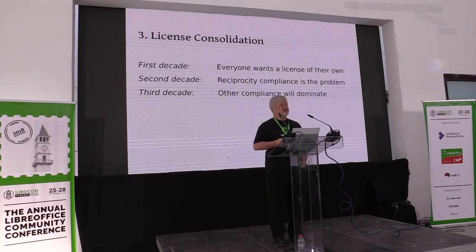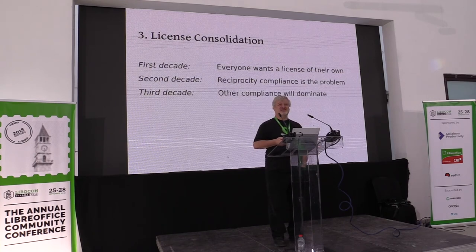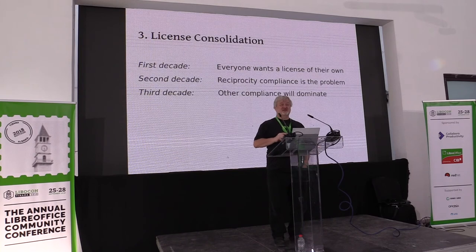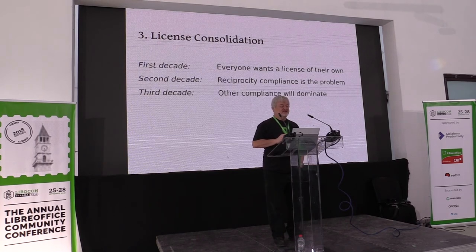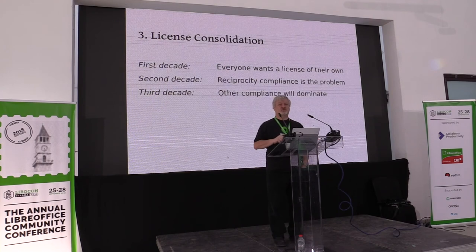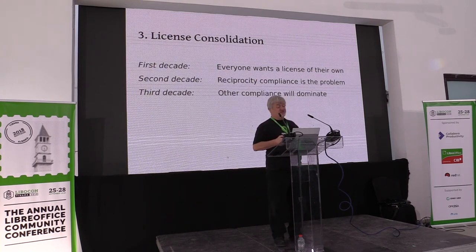License consolidation — I think that the first decade was everyone wanting a license of their own. Those were all vanity licenses. IBM made a public license, some made industry standards licenses. By the second decade you realized that people really didn't need unique licenses because licenses are about bringing communities together, not keeping them apart. And what became the dominant problem in the second decade was compliance in the world of reciprocal licenses, particularly the GPL. I think in the third decade the biggest problem is going to be other kinds of compliance.